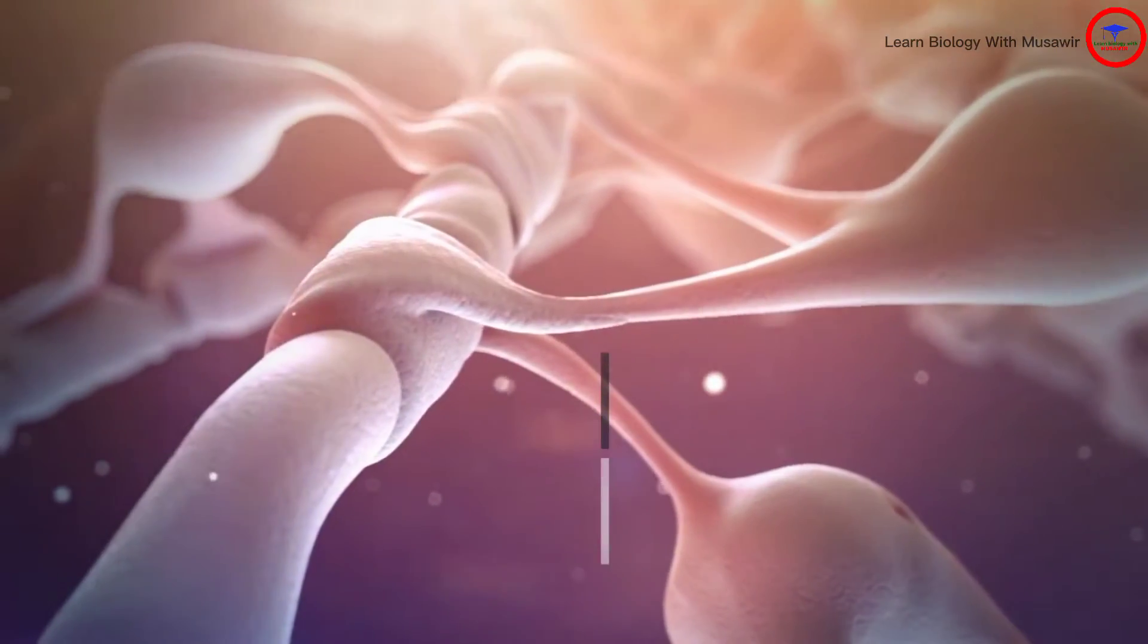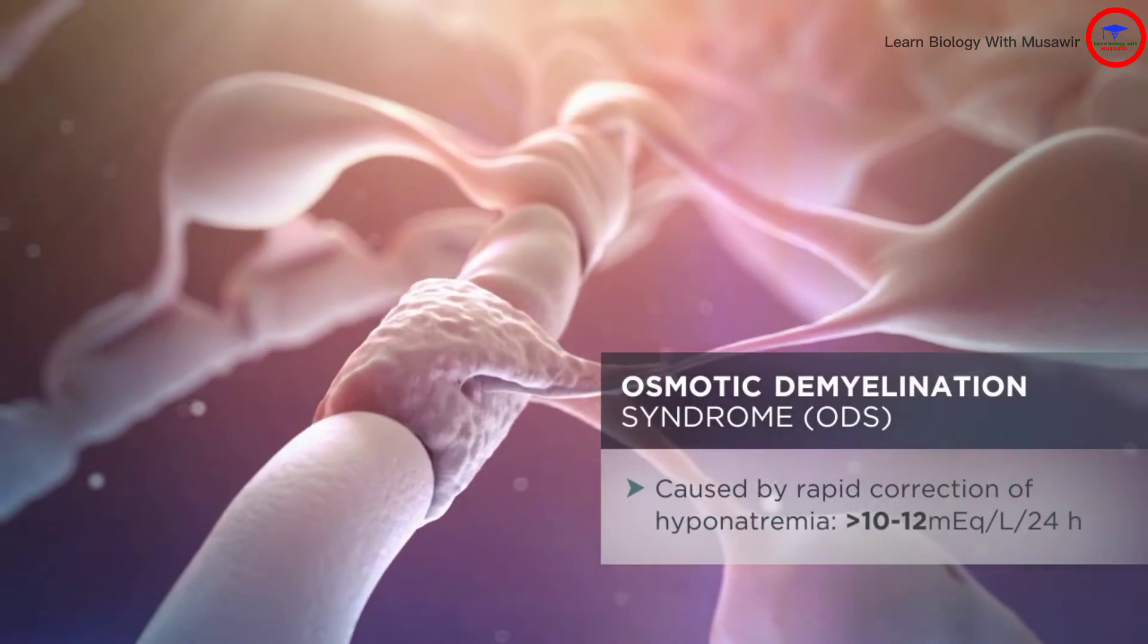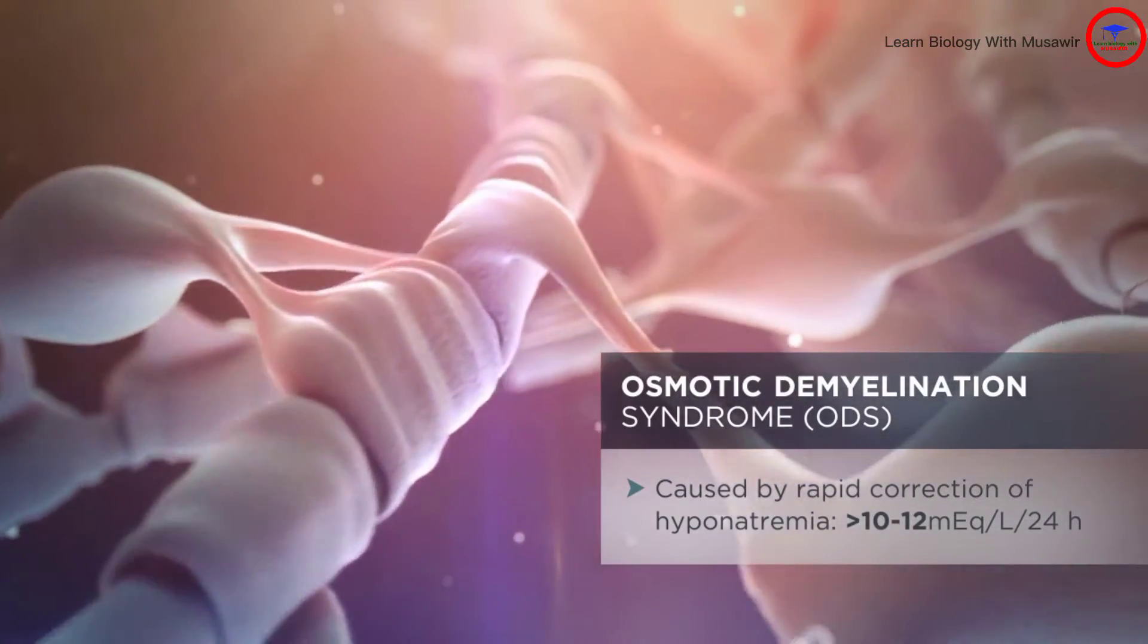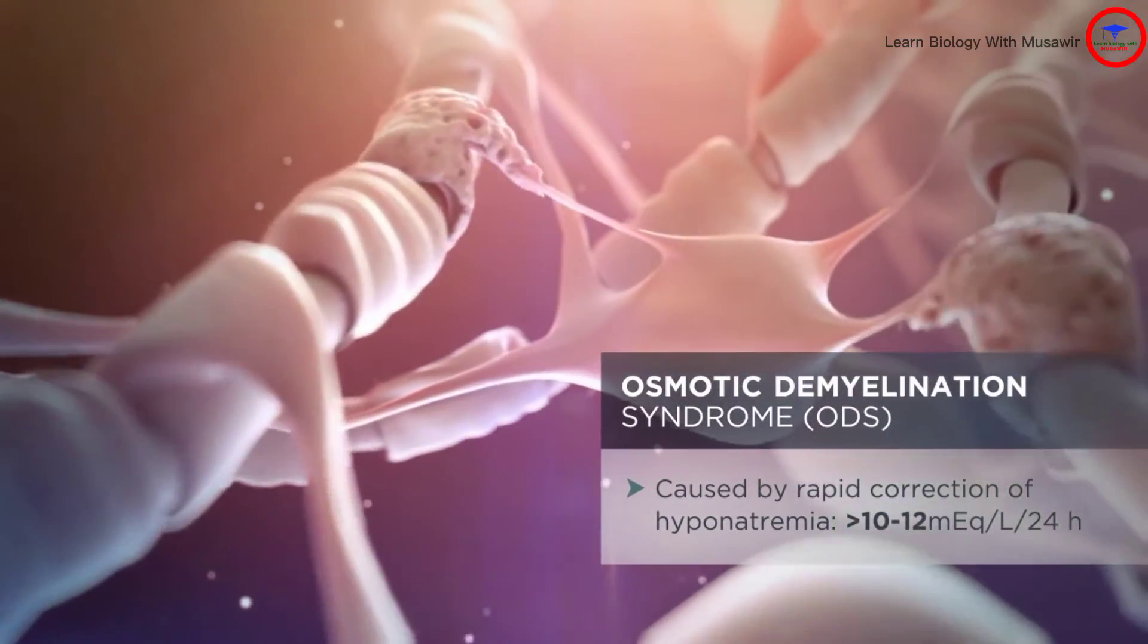When hyponatremia is corrected too rapidly, greater than 10 to 12 milliequivalents per liter per 24 hours, the brain's ability to recapture lost organic osmolites can be outpaced, which may lead to osmotic demyelination.